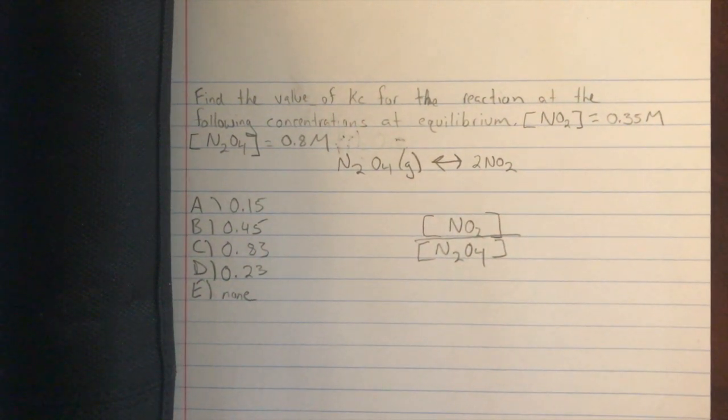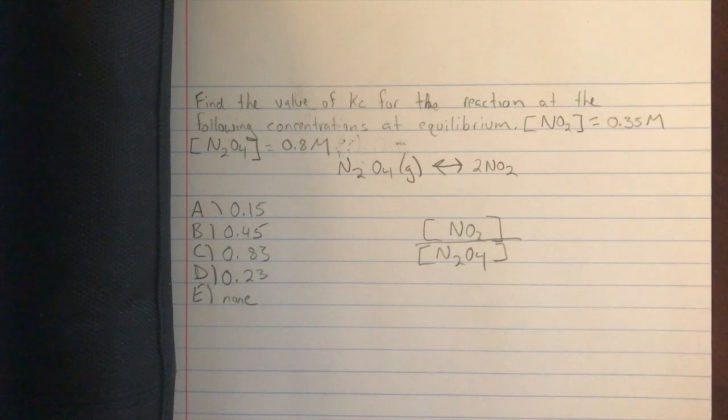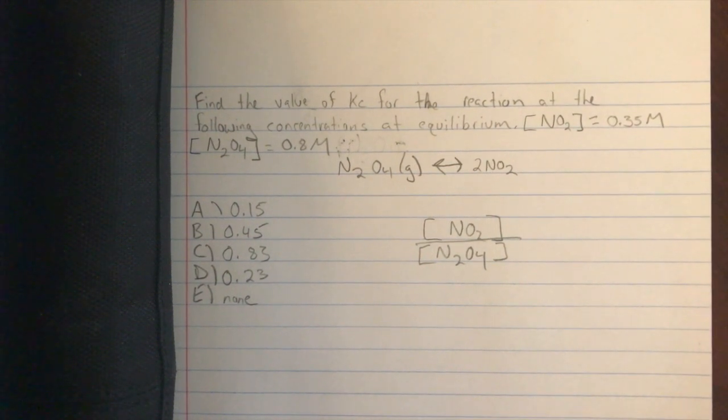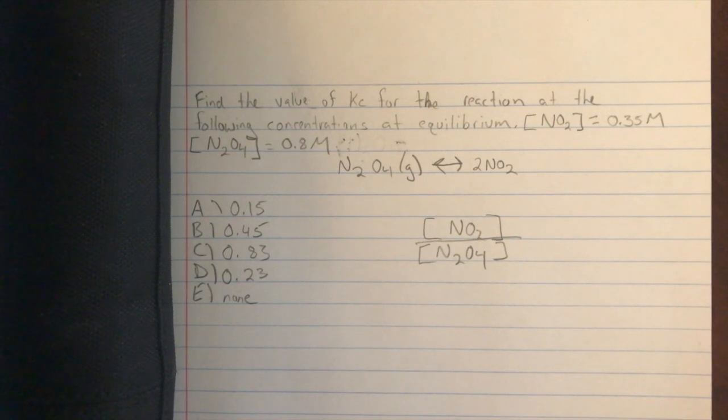Notice in the equation given there are two nitrogen dioxides, so we have to put that two as an exponent on the nitrogen dioxide in the numerator.